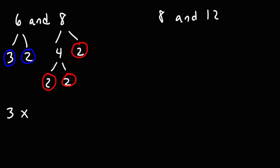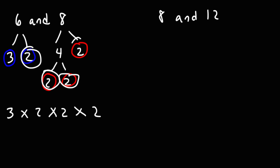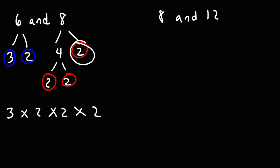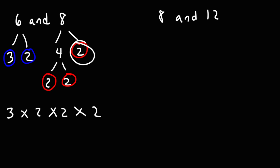Now, 6 has one factor of 2 while 8 has three factors of 2. We're going to pick the higher number of these, which is three factors of 2. What we're not going to do is pick the sum of the factors of 2 — so we're not going to pick four factors of 2. We're comparing three factors of 2 versus one factor of 2, and we pick the higher, which is three factors of 2.